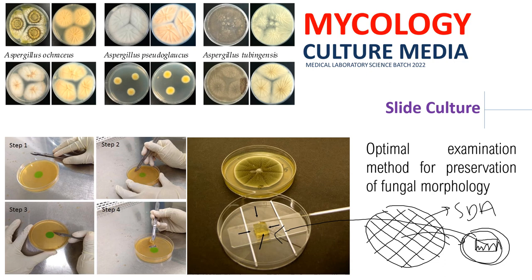After inoculating, place a coverslip on top. Then close it with the upper lid of the plate and incubate. If you want to observe mycelia, incubate at 24°C; if you want to observe yeast forms, use 37°C. For slide culture, since we usually observe mycelia, incubate at 24°C. This is the optimal examination method for the preservation of fungal morphology.